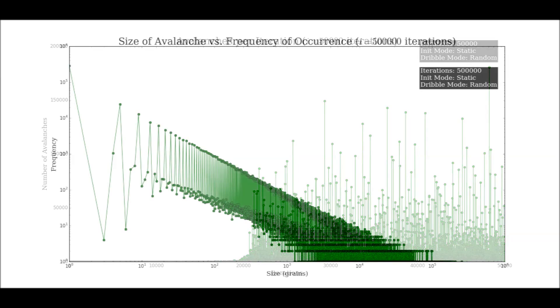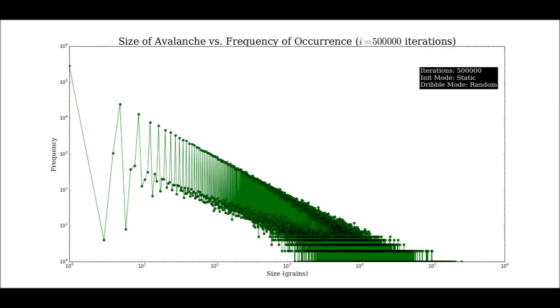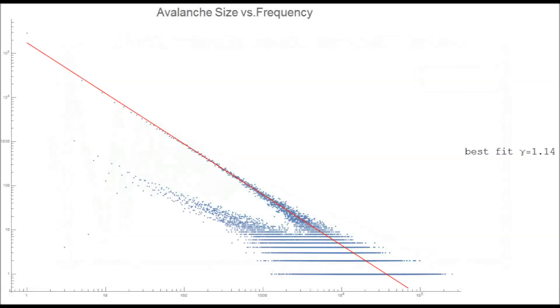I've plotted as an output of my model a log-log plot of avalanche size versus avalanche frequency. We see two notable artifacts in the data. One appears to be linear, affirming the power law necessary to call our system critical. However, there's a second curve, which does not appear to converge to the same slope. This anomaly does not even appear to be linear.